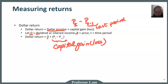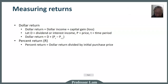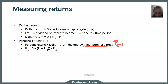Using symbols makes it easier to convey a lot of information in a small space. In addition to dollar return, we can also express return as a percentage. The percent return equals your dollar return divided by the initial purchase price P(t−1). We can express percent return as R, where R equals dividend plus capital gain — your dollar return — divided by the initial price.